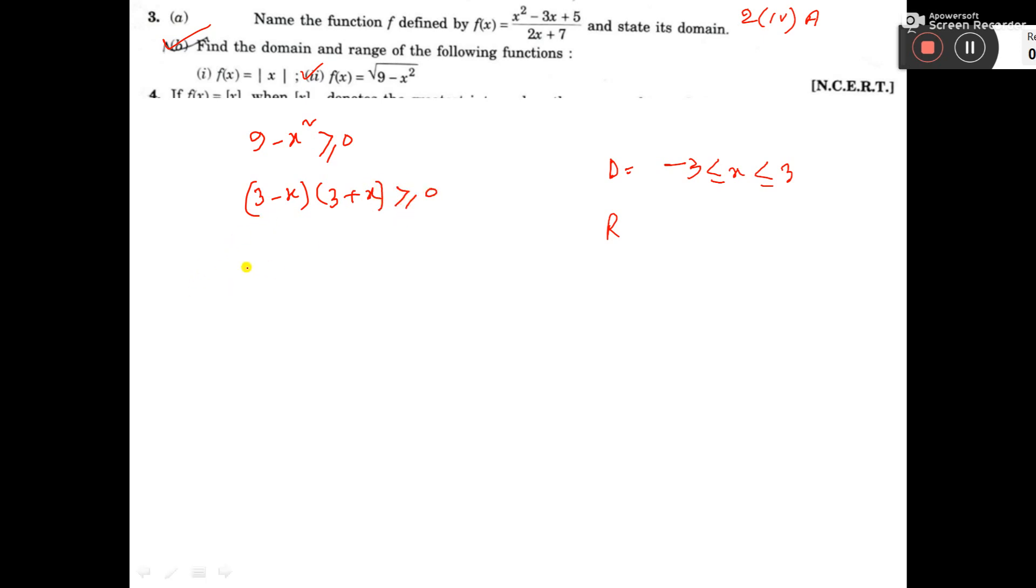Now, from here, three combinations may come. One is 3 minus x greater than equal to 0. Then 3 plus x less equal to 0. Then 3 minus x greater than 0. Then 3 plus x less than 0. There are four combinations may come here.